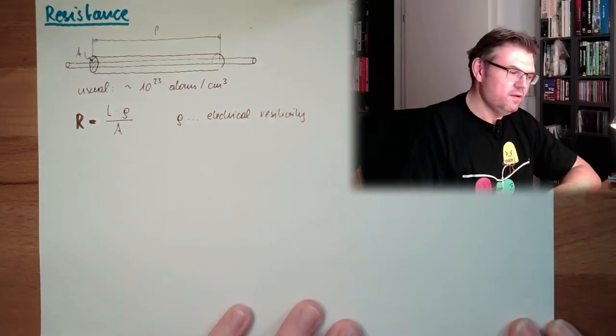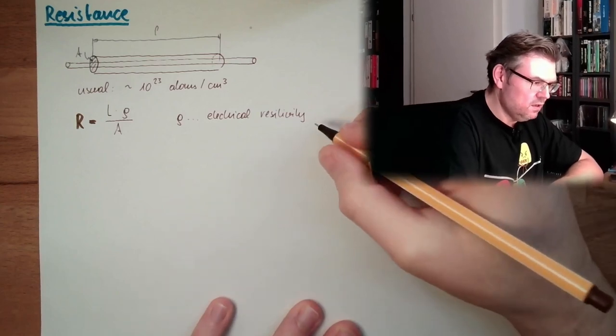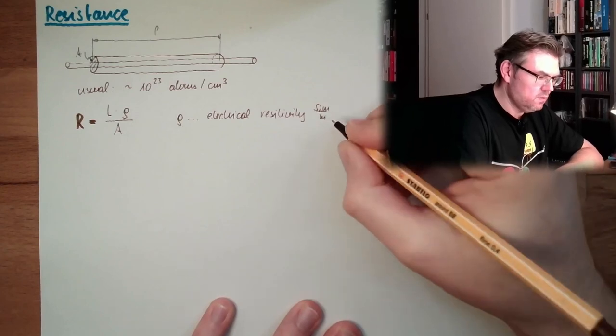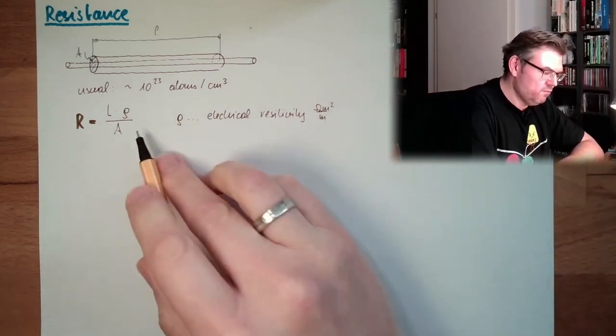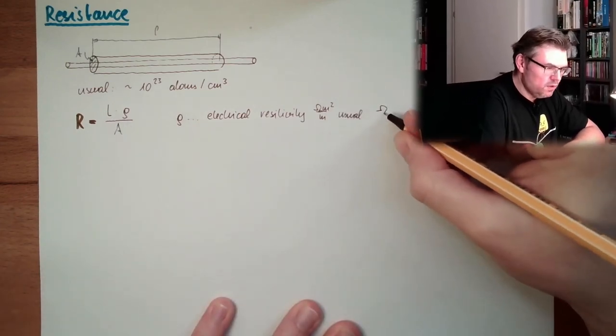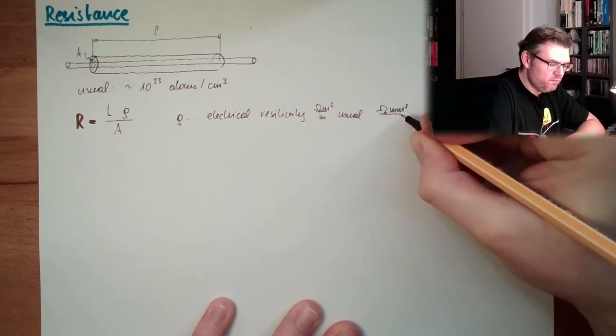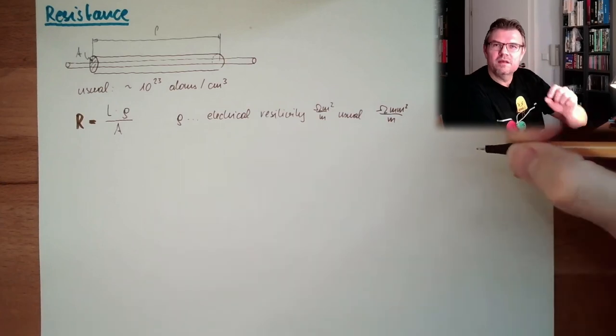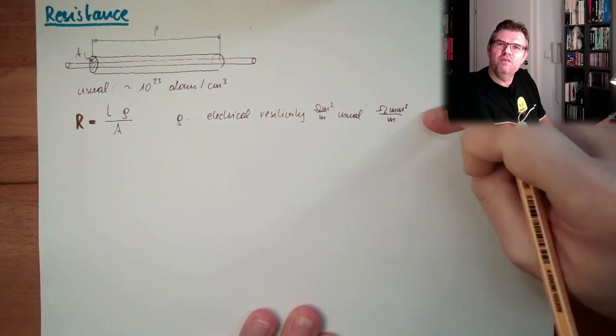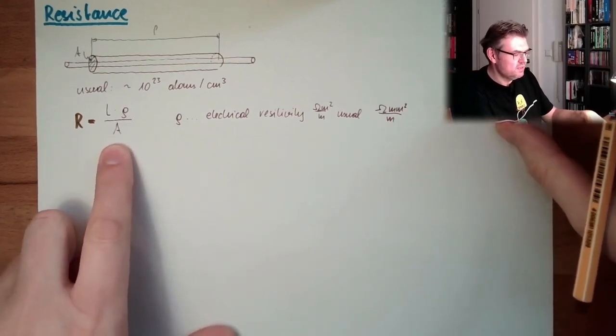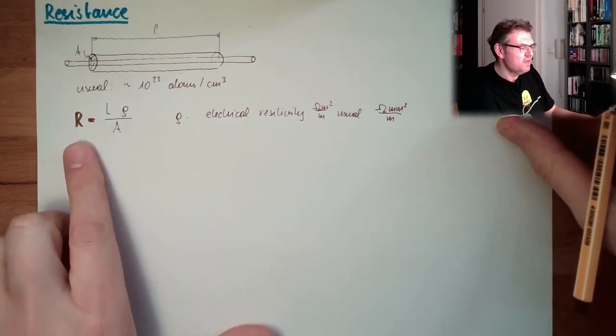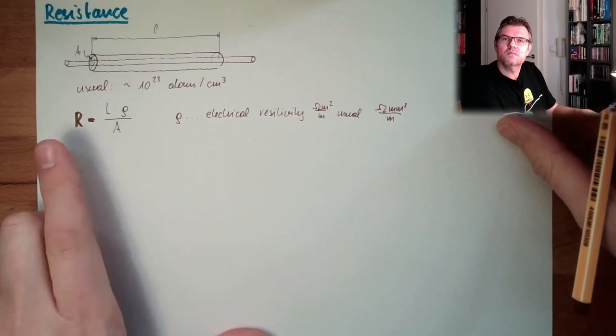Electrical resistivity unit is ohm meter by meter. Ohm square meter by meter. Then we lift usual is ohm square millimeter by meter. So usually the area is given in square millimeter and the length is given in meter. So it is convenient to use this. Then we can put this in in square millimeters and the length in meters and we are fine. We get out the resistance in ohm.